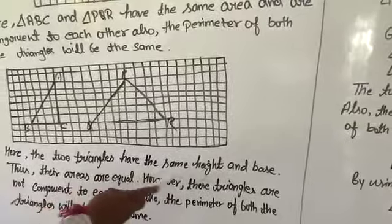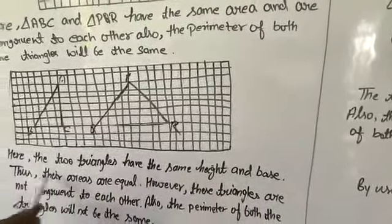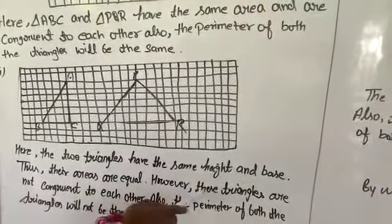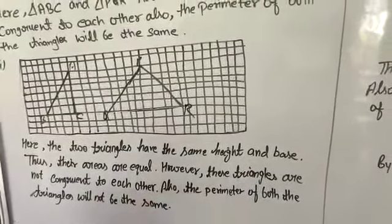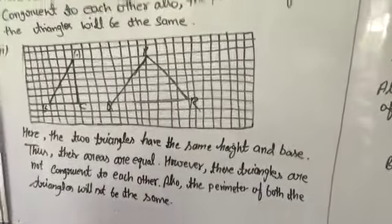Here, the two triangles have the same height and base. Thus their areas are equal. However, these triangles are not congruent to each other. Also, the perimeter of both triangles will not be the same.